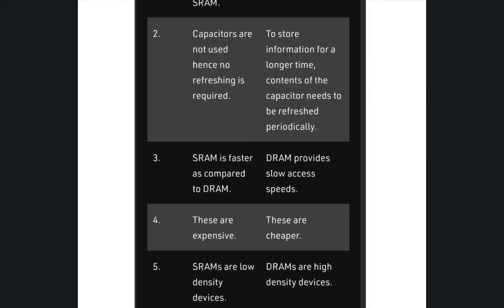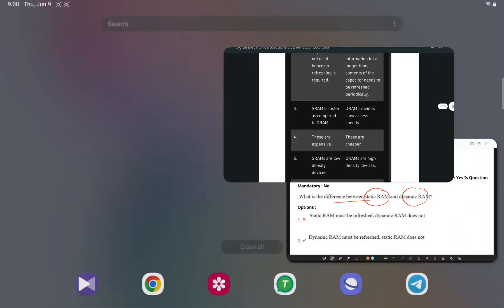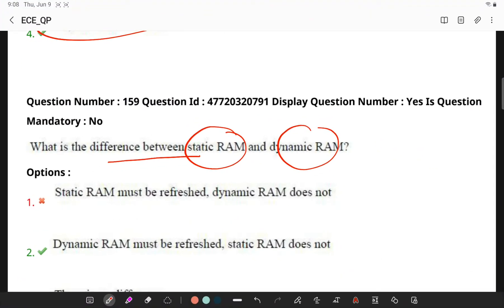So, obviously, transistors are costlier than capacitors and SRAMs are low-density devices whereas there is no catch memory in this particular case.